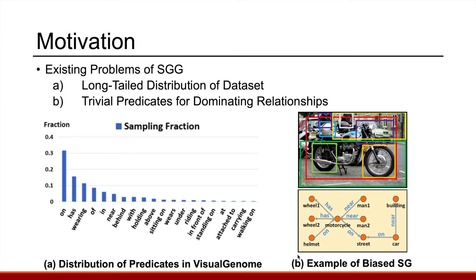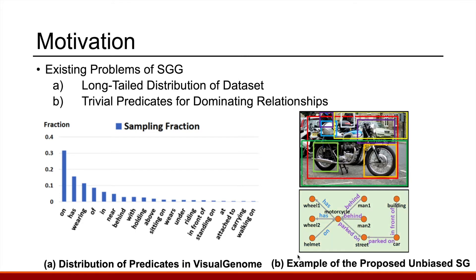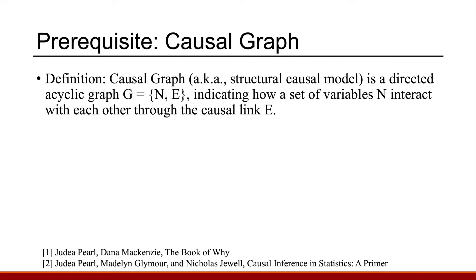You can imagine a detector detecting every scene as an object — a dog is an object, a cat is an object, and a bicycle is also an object — which makes the whole task meaningless. The proposed unbiased scene graph generation can successfully infer much more fine-grained predicates.